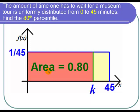In other words, the area of this sub-rectangle, everything to the left of k, must be 0.80 or 80%. So now I'm going to compute the area in two different ways.